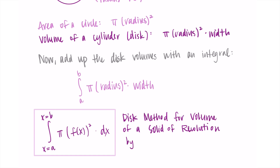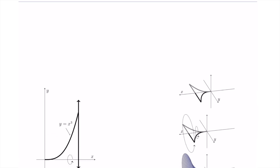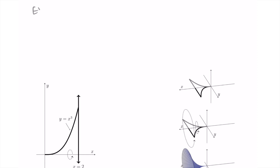This is formally called the Disk Method for volume of a solid of revolution, and it comes from revolving around the x-axis. Whenever we're using discs revolving around the x-axis, we use this formula. There are other methods — the Washer Method and the Shell Method — and I have other videos on those. This is specifically about the Disk Method revolving around the x-axis; the y-axis formula looks similar but we cover that later.